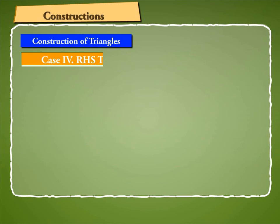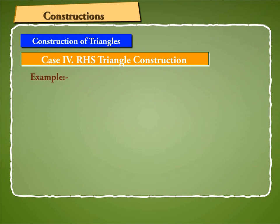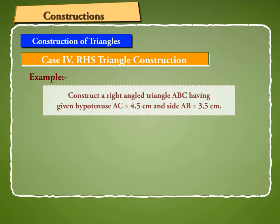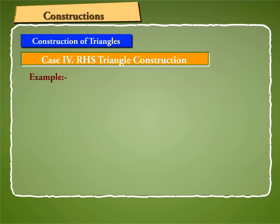Case 4: RHS Triangle Construction. To construct a right-angled triangle whose hypotenuse and one side are given. To understand this, let us take an example. Construct a right-angled triangle ABC having hypotenuse AC equal to 4.5 cm and side AB equal to 3.5 cm. Since AC is the hypotenuse, angle B is equal to 90 degrees.